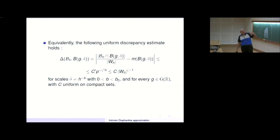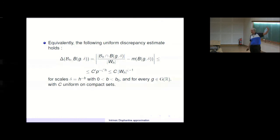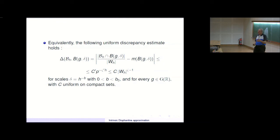Equivalently, the following uniform discrepancy estimate holds: the discrepancy of the set of rational points with respect to small balls in the real group — the number of rational points in a small ball divided by the normalizing measure, minus the usual Haar measure on the real group — is estimated by a negative power of the volume of the height balls, for scales going to zero, uniform on compact sets and for every G in G_R.